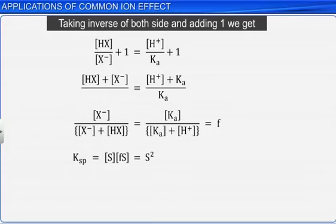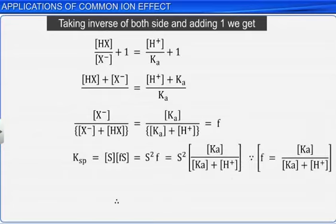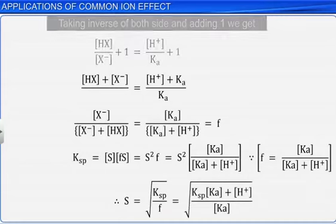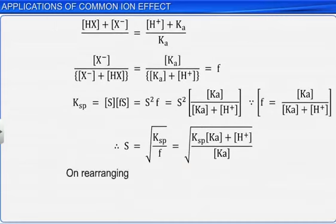Therefore, solubility is equal to the square root of Ksp divided by f. On rearranging the equation, we get solubility S is equal to the square root of Ksp times ([H+] + Ka) divided by Ka.